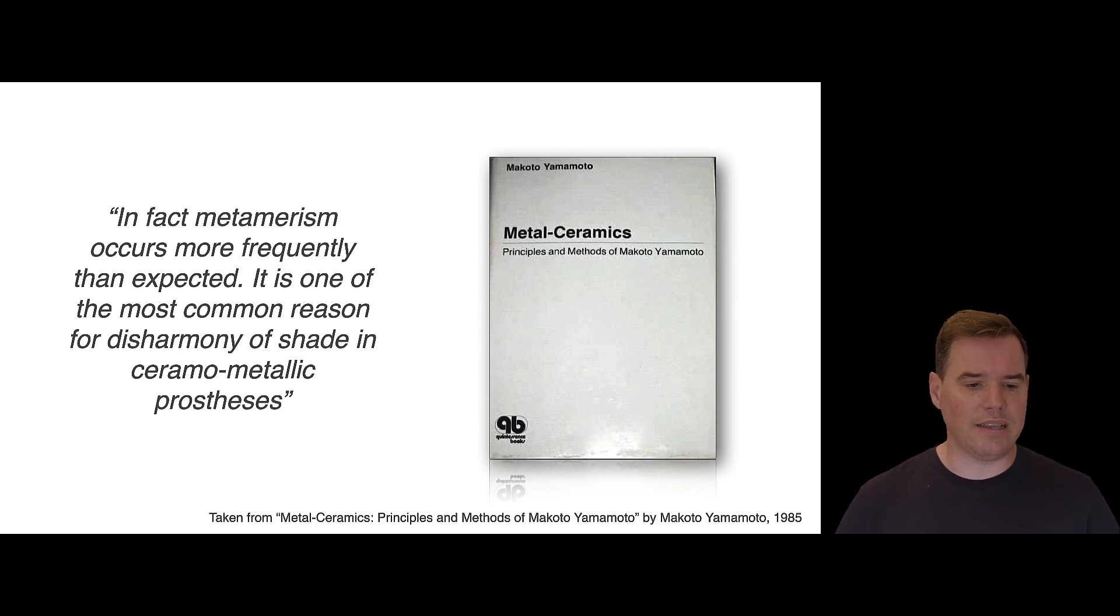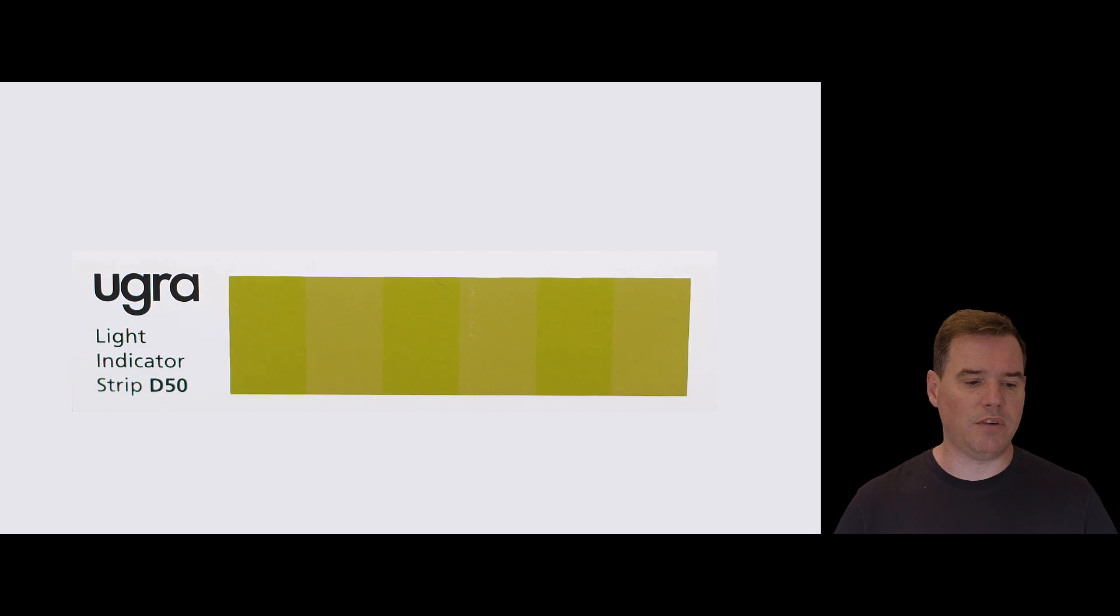So here's a really good example of metamerism, and this is provided by this light indicator strip here, which comes from a Swiss company called Ugra. And when you view it under D50 lighting, so a color temperature with 5000 Kelvin, then this green looks like a uniform color strip almost. But when you switch to a different color temperature, in this case TL84, you can notice a very visible shift in the color, and the colors no longer match, and the two greens look very, very different.